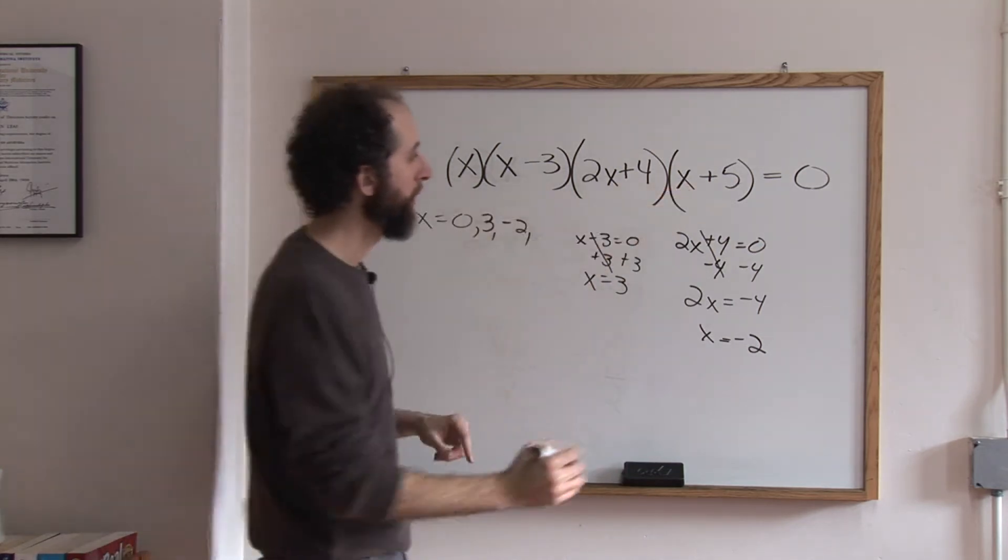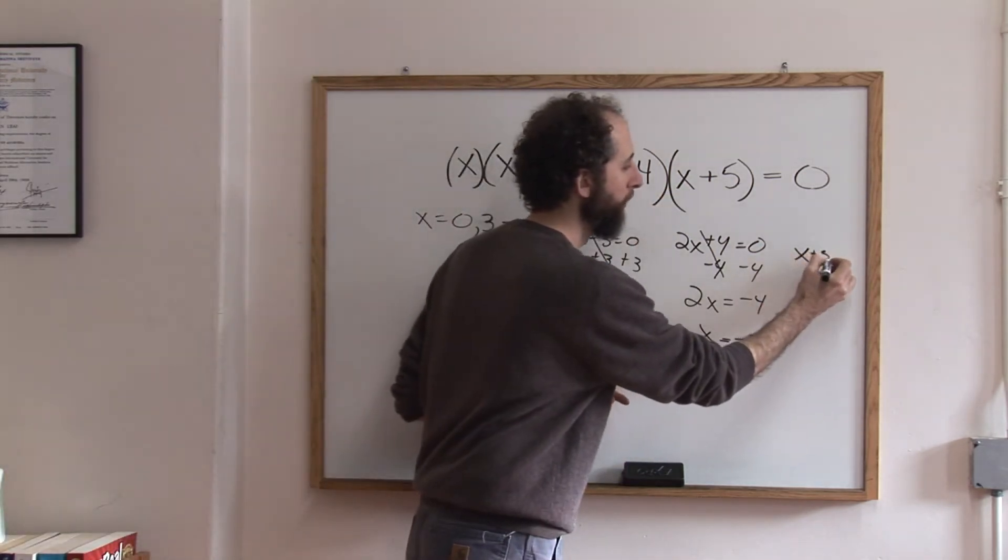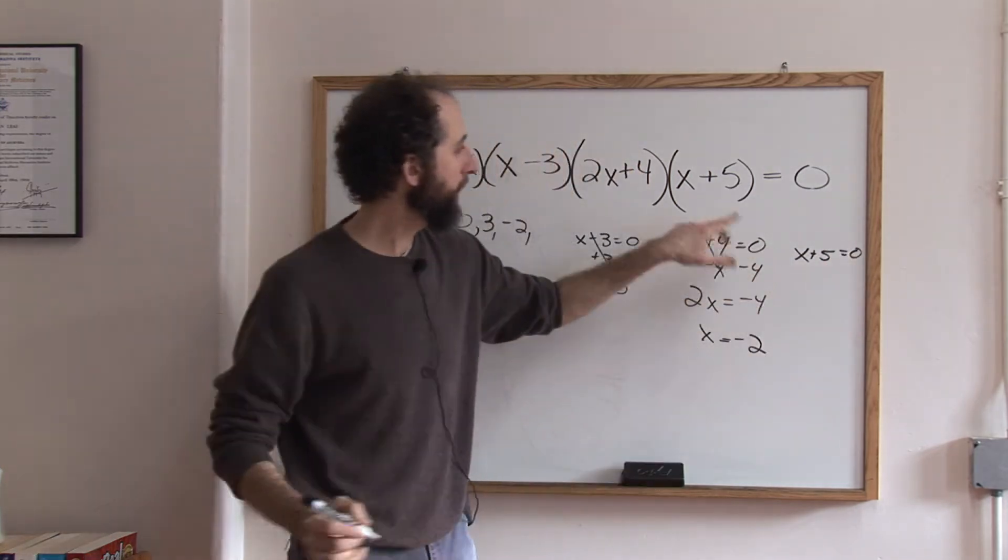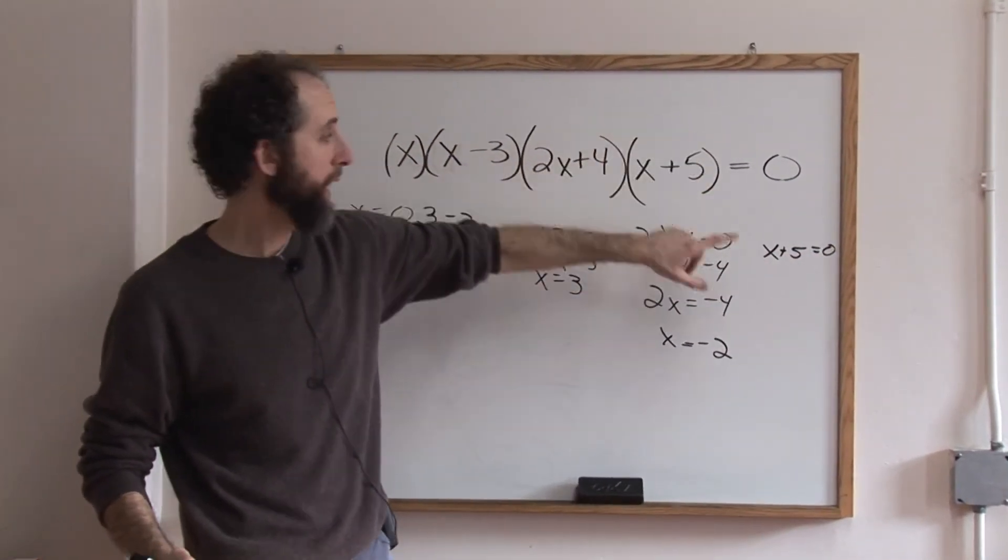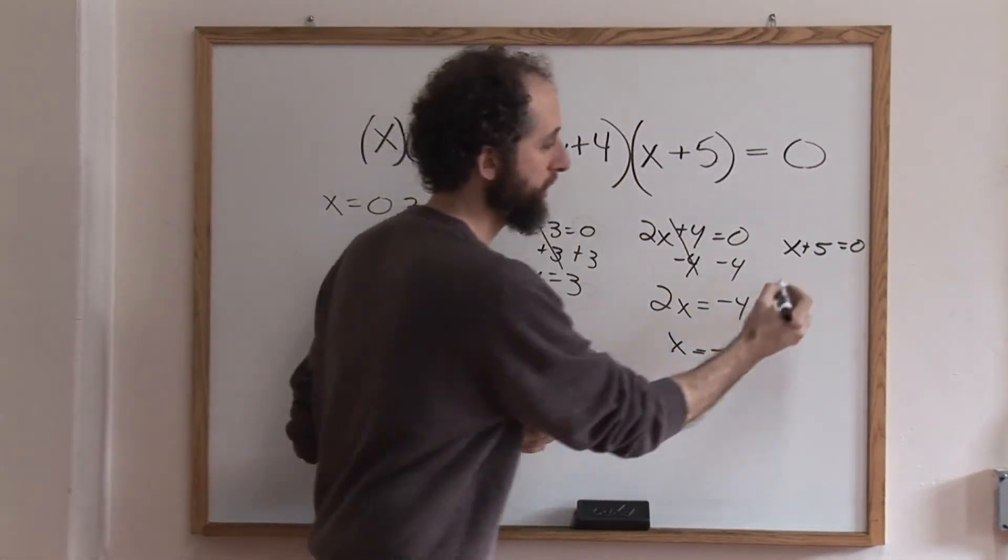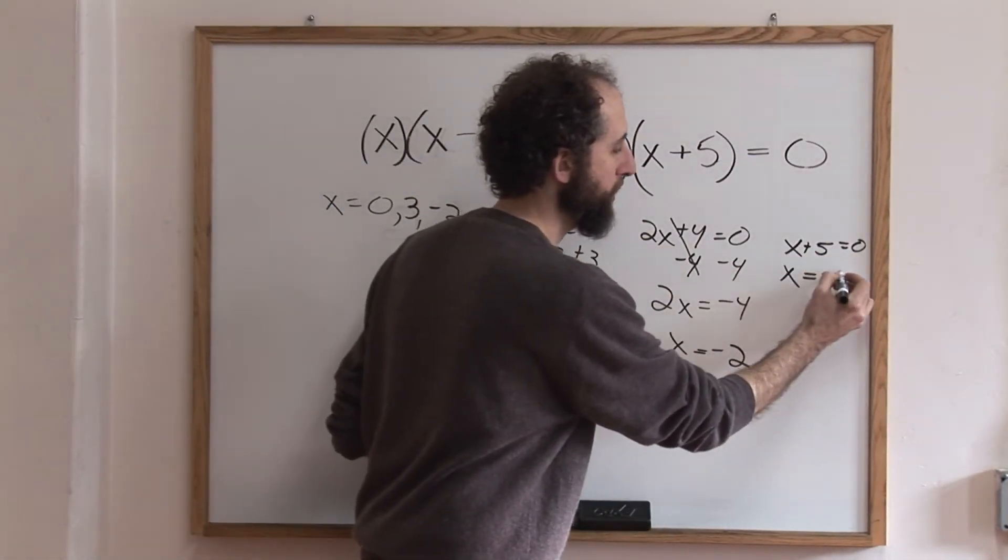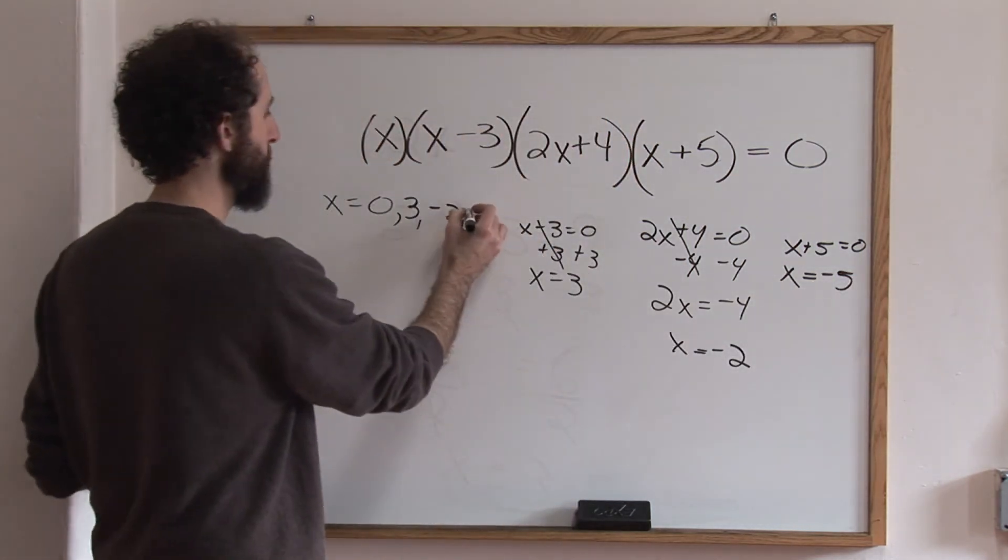And lastly, this one. x plus five equals zero. I'm writing x plus five equals zero because I'm saying, what would make this expression in the parentheses equal to zero? So we're going to subtract five from both sides. x equals negative five. That's our last solution.